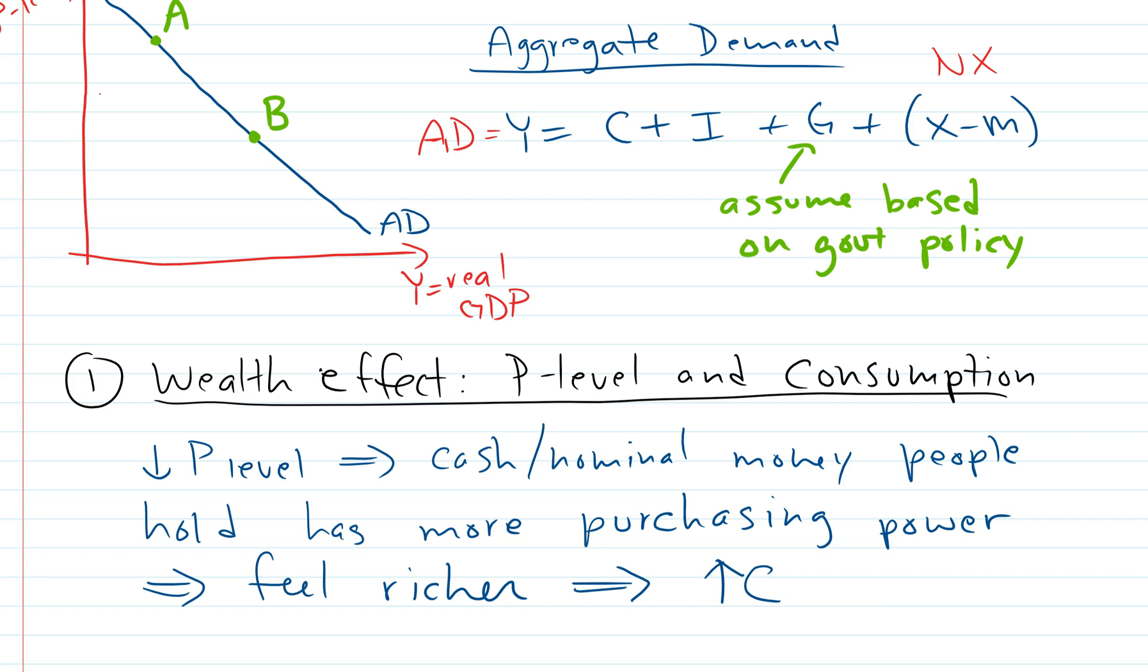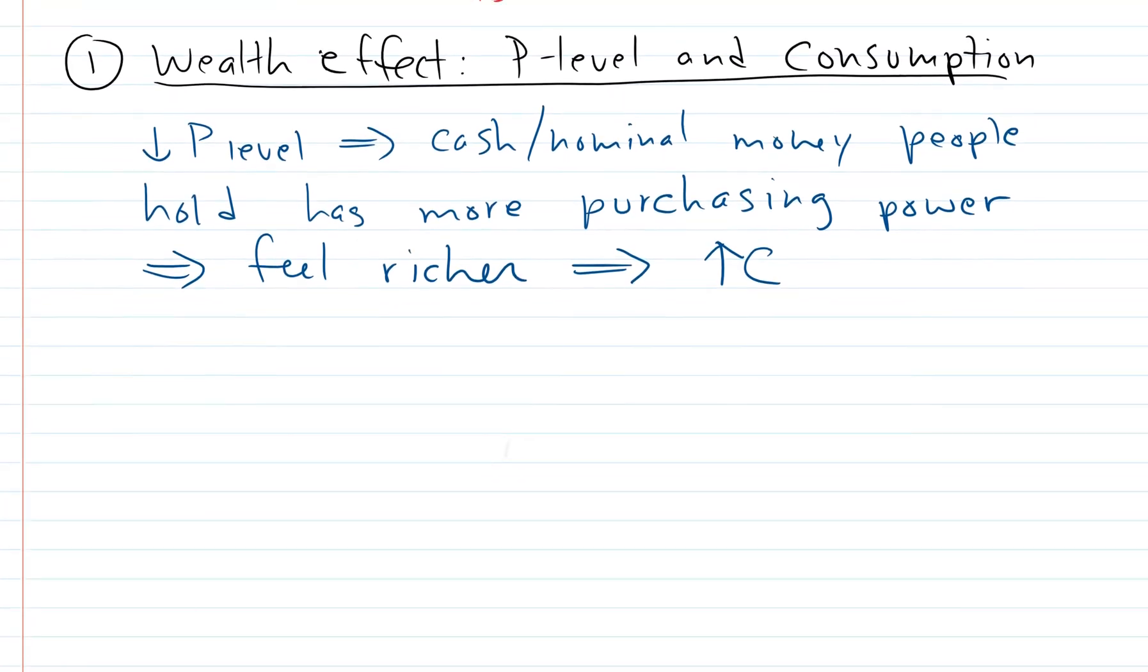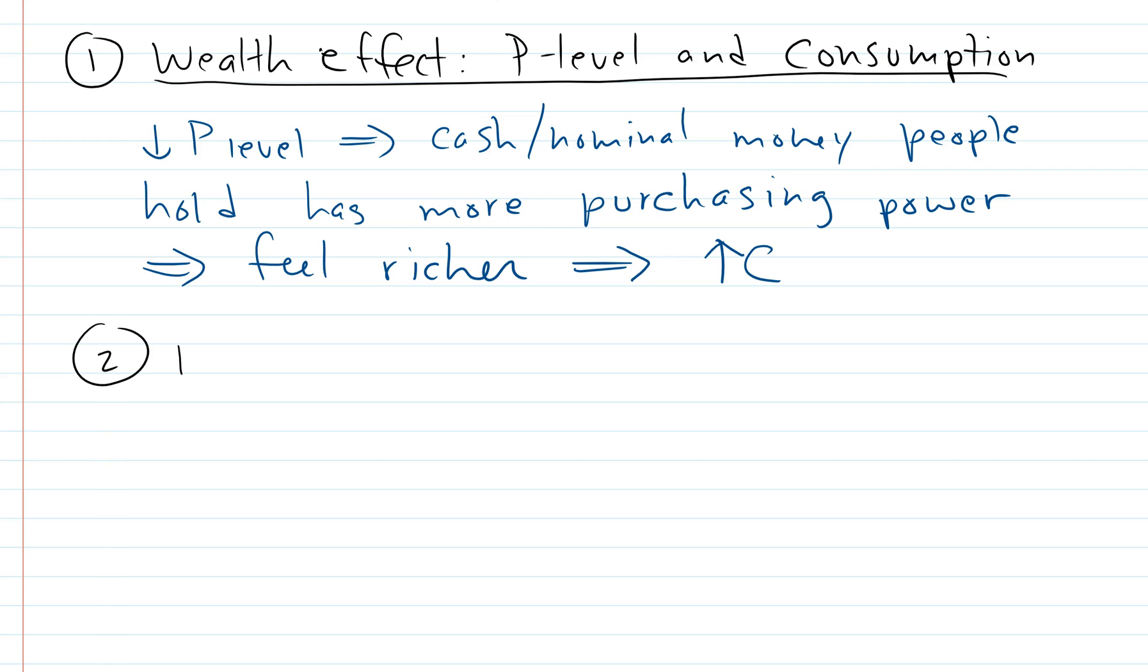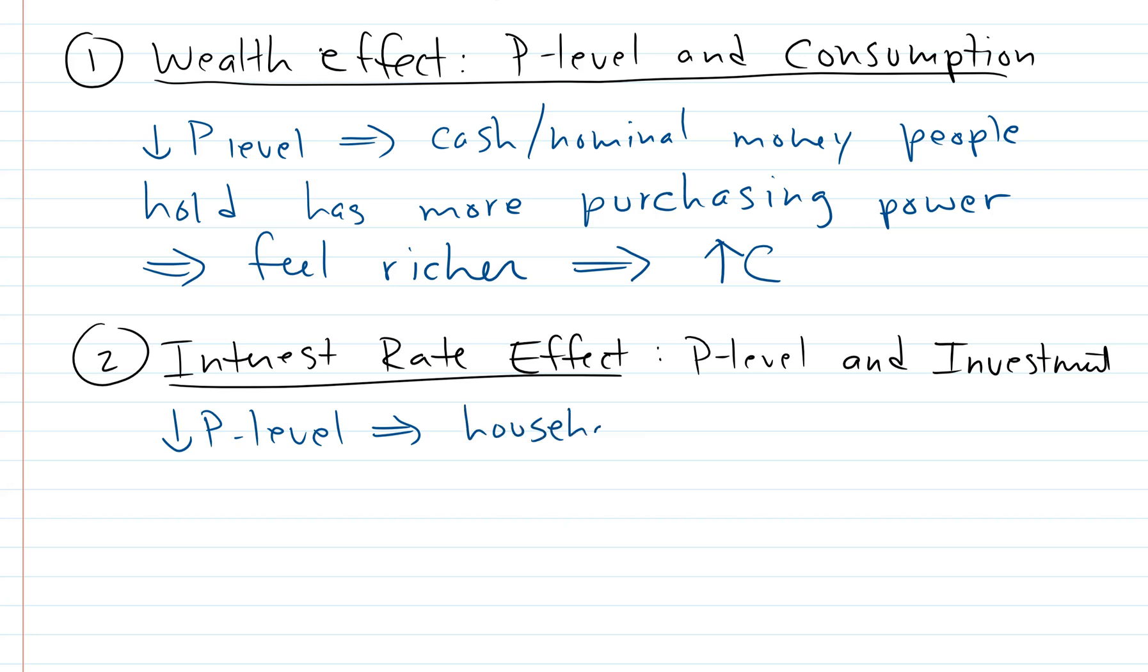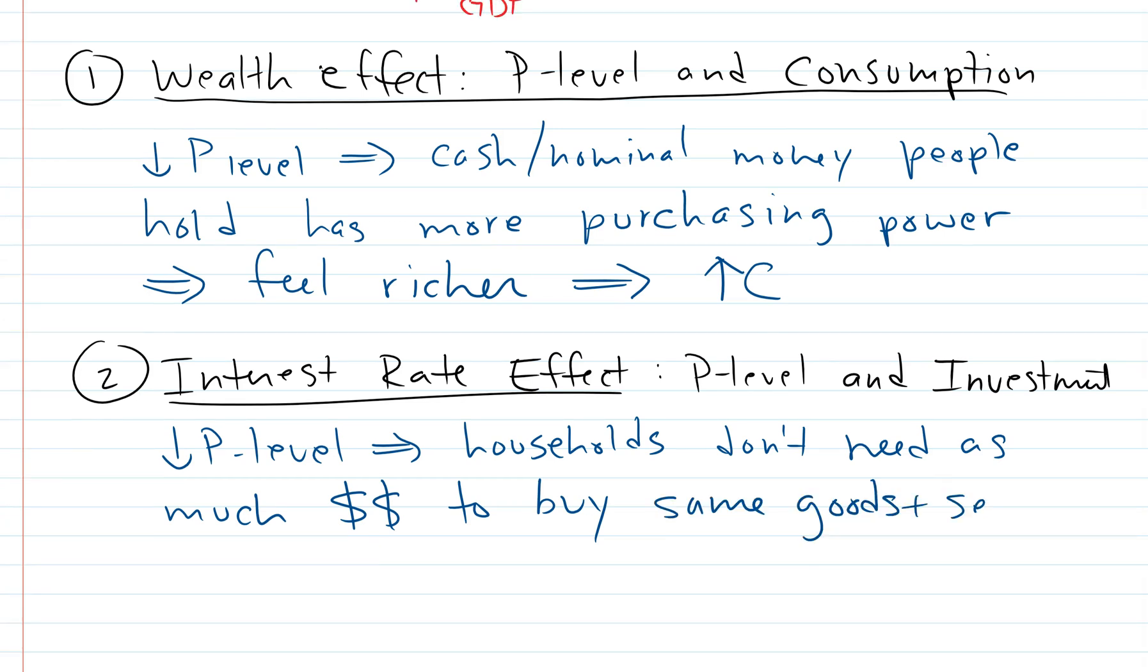The second reason is called the interest rate effect. This is the price level and investment, where investment is physical capital investment. You get a decrease in the price level, so regular people - the households - don't need as much money to buy the same goods and services.